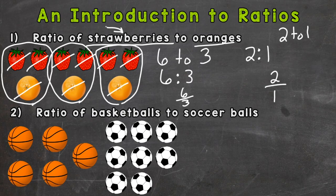Okay, so again we can use the word 'to', a colon, or a fraction. Whatever comes first in your ratio, right, strawberries to oranges up here in the original problem, needs to come first in your ratios when you write out the answer. Now there could be a problem that's a ratio of oranges to strawberries. In that case, you need to put the oranges first and the strawberries second.